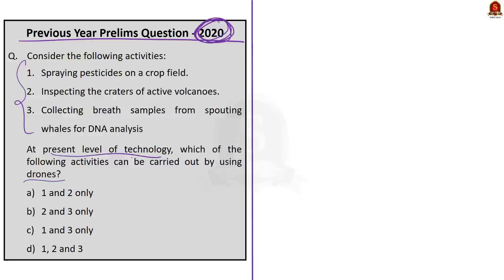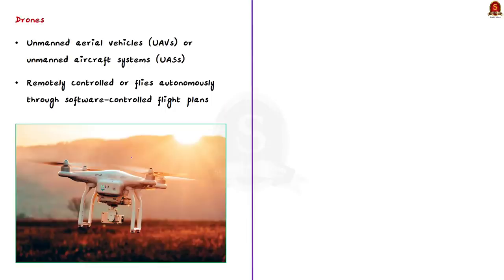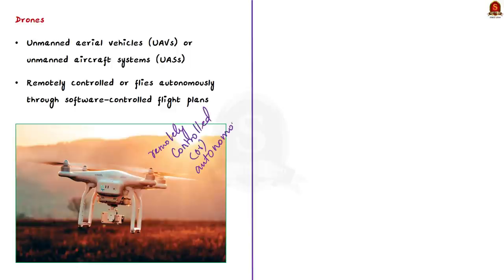Drones are formerly known as Unmanned Aerial Vehicles or Unmanned Aircraft Systems. A drone is a flying robot that can be remotely controlled or can fly autonomously through software-controlled flight plans in their embedded systems.